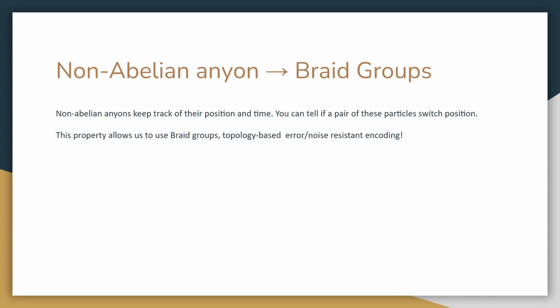This allows scientists to consider a topological system of braid groups as information manipulation. As a topological system, it is resistant against small variations.